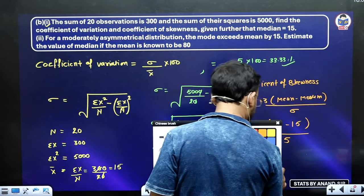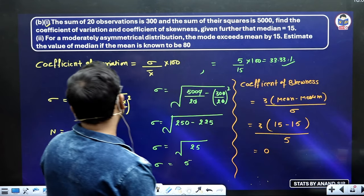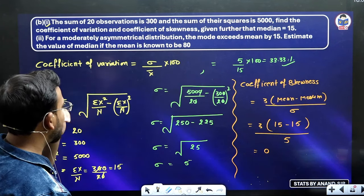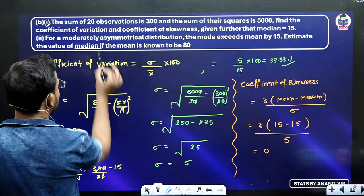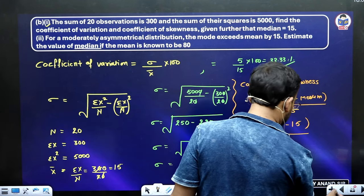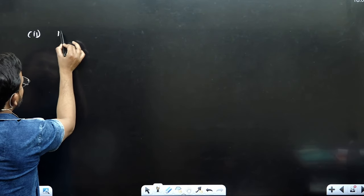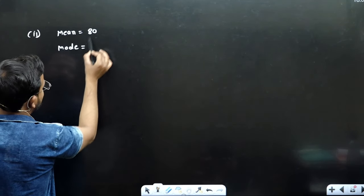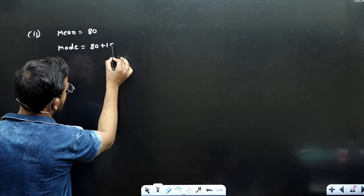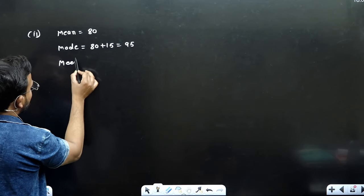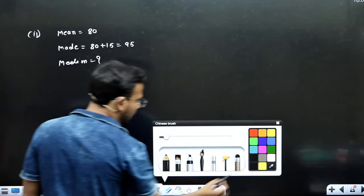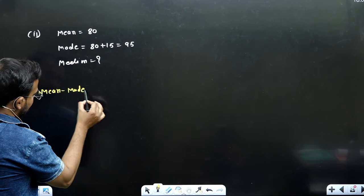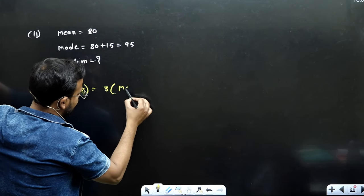Now can we solve the second part? In the second part, for a symmetrical distribution the mode exceeds the mean by 15. So mean is 80 and mode is 95. You have to estimate the value of the median. The relation between mean, median, and mode is: mean minus mode equals 3 times (mean minus median).